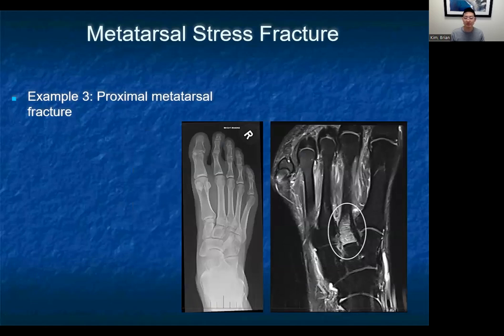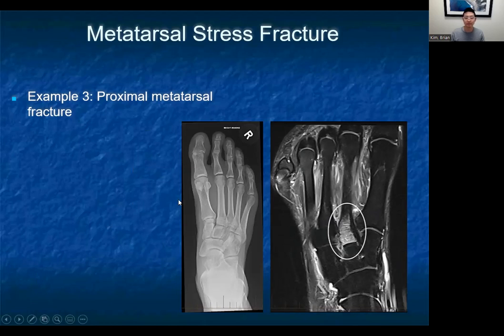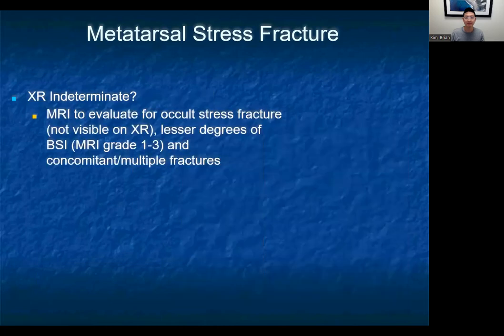One potential pitfall with metatarsal injuries is the proximal end of the metatarsal. As you can see on the x-ray, there's a lot of overlap and shadowing of bones in this region, which can make it very difficult to detect a fracture, especially subtle ones. An MRI was done and revealed significant bone marrow edema at the base of the metatarsal, consistent with a bone stress injury. If the x-ray is indeterminate, you can get an MRI to evaluate for occult stress fractures. In addition, MRI can also demonstrate multiple stress fractures even if radiographs may only indicate one.